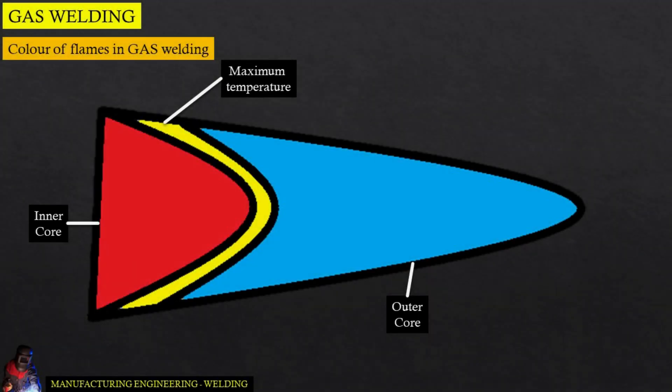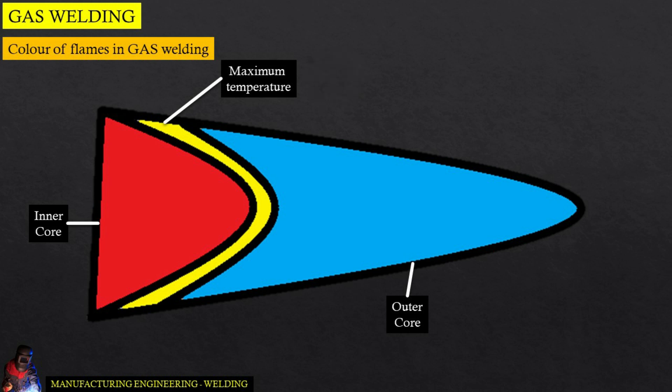The maximum temperature is spotted at the interface of the inner and outer core, because just after the inner zone the flame gets in contact with the atmosphere. From that point, the temperature keeps on decreasing gradually until the periphery of the flame.